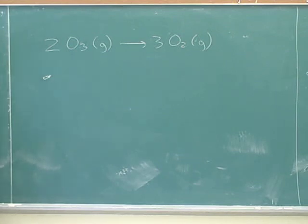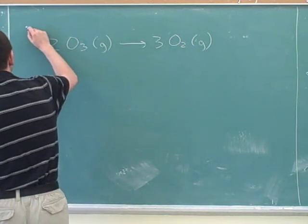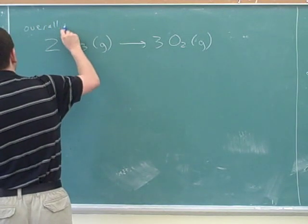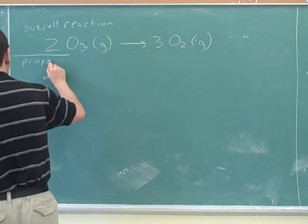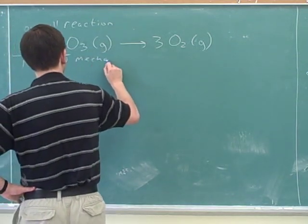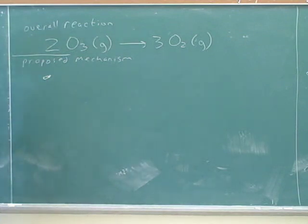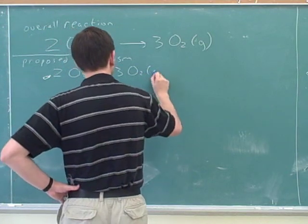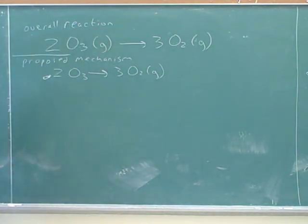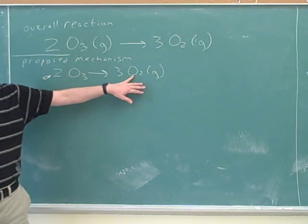Well, I think the most straightforward guess here is that you would guess that there's a bunch of ozones floating around in the air here, and every once in a while two ozones bump into each other and form oxygen. So a logical mechanism, so I would call this the overall reaction. And here's a proposed mechanism. Here's a proposed mechanism for how that could happen. Maybe every once in a while two ozones bump into each other and exchange atoms and turn into oxygen.